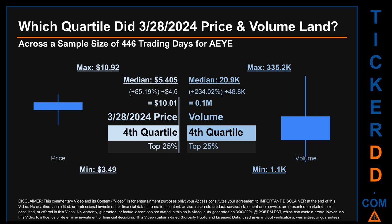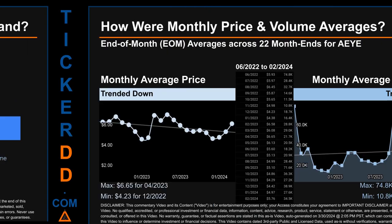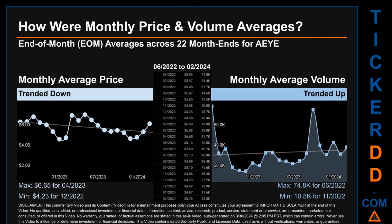Hello, my name is Claire. How were price and volume averages for AEYE across 446 trading days? There were a total of 22 month ends, for which monthly averages for daily price and volume were calculated. Overall, monthly price average trended down while monthly volume average trended up. The maximum end-of-month average price was $6.65 for April 2023, while the minimum was $4.23 for December 2022. For volume, June 2022 and November 2022 respectively saw the highest and lowest monthly average volume at 74,800 and 10,800.